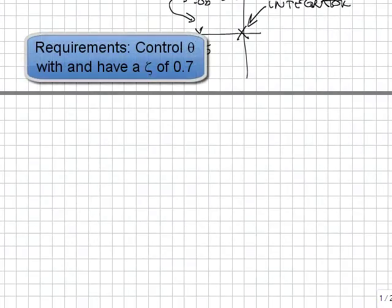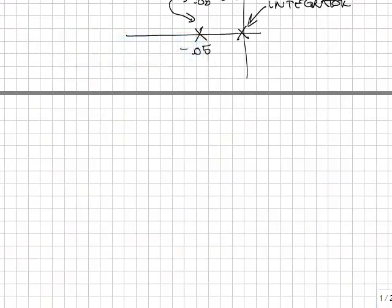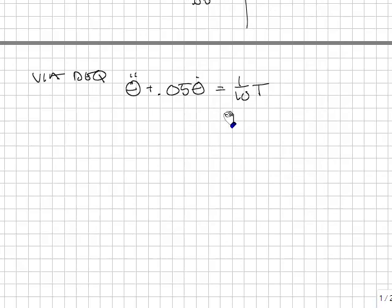I'm going to do the control system's design two ways. One, I'm going to set it up via differential equations, and then I'm going to set it up via block diagrams. The differential equation for the system is theta double dot plus 0.05 theta dot is equal to one-tenth T. For proportional control, we're going to say T is equal to Kp times theta desired minus theta.